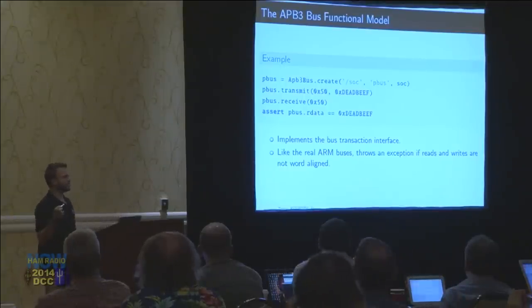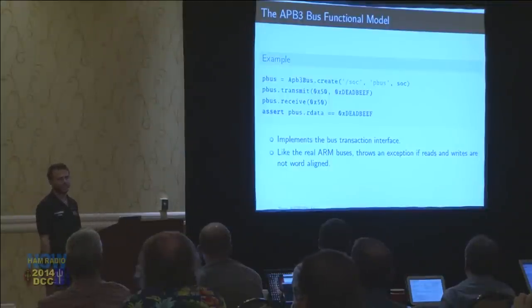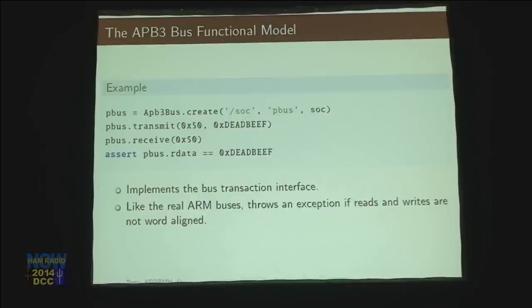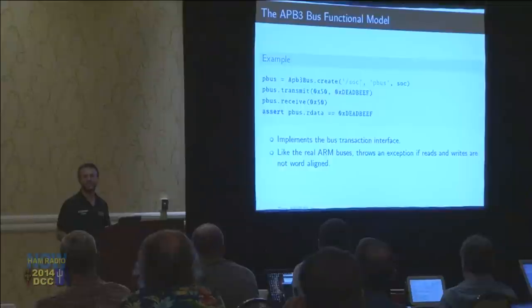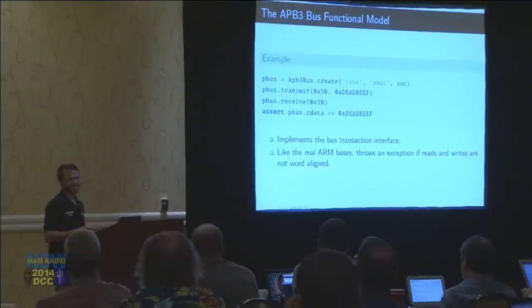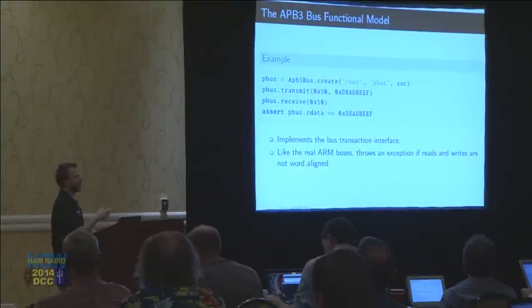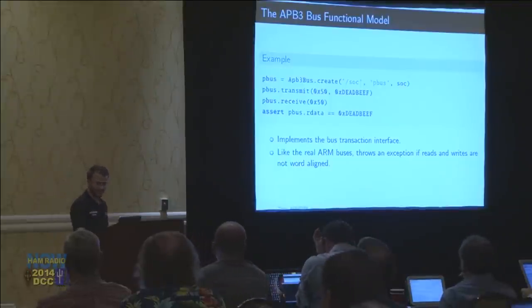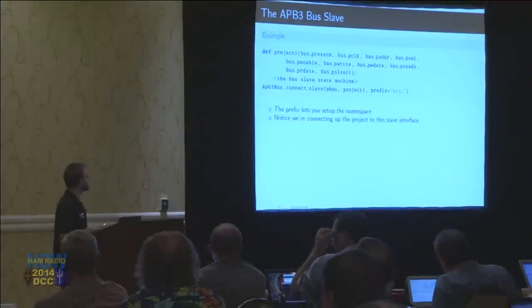One other note is that on ARM buses, everything is word aligned. A word size — for all the processors we can get on the market right now — they're 32-bit. So everything has to be on a four-byte boundary. If you don't do things on a four-byte boundary and you try to access address 0x401 or 0x51 or something, on a physical ARM processor it will just crash the machine. I similarly have something in there that throws an exception if you try to access memory that's not aligned on a word boundary.